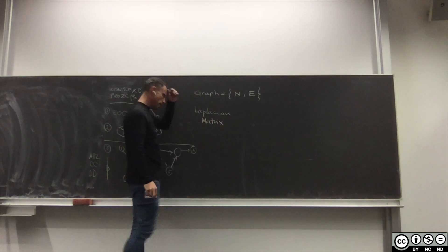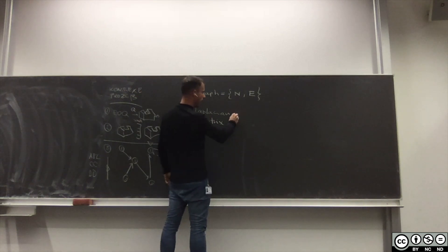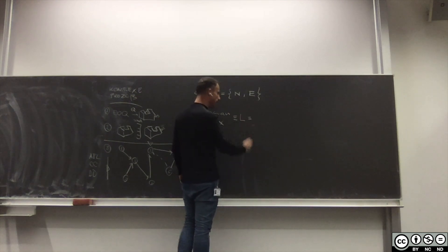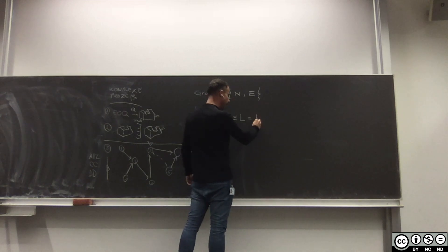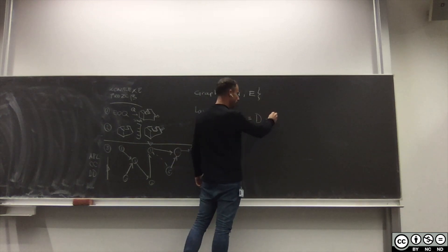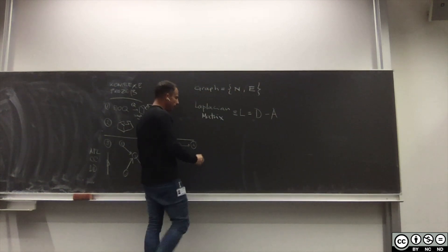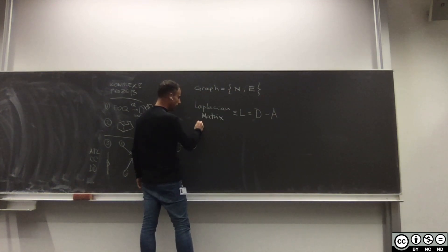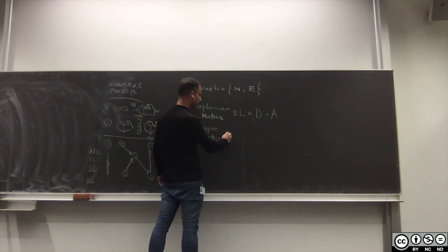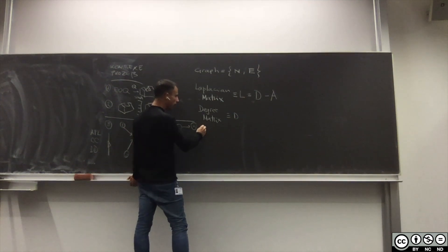Kurz L. Dieses L ist gleich D minus A. Und was heißt D und was heißt A? D heißt Degree Matrix und A heißt die Adjacency Matrix.